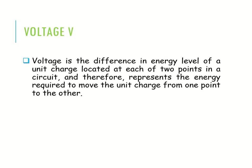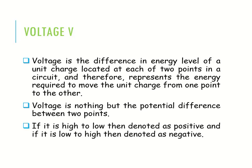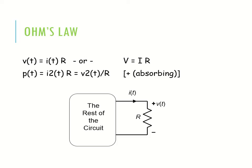Voltage is the difference in energy level of a unit charge located at each of two points in a circuit, and therefore represents the energy required to move the unit charge from one point to another. It is the potential difference between two points — if it is from high to low it is denoted as a positive value, and if it is from low to high it is denoted as a negative value.